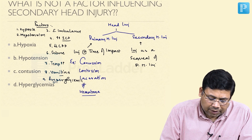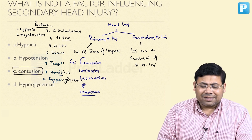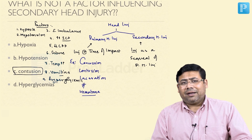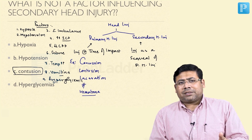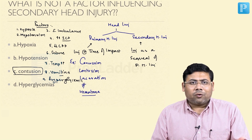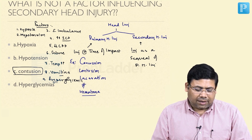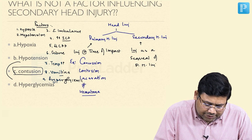In this case, contusion is a primary head injury. It is not a factor controlling secondary head injury. Hence, the answer for this question is C.